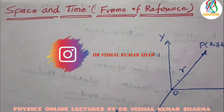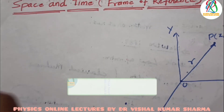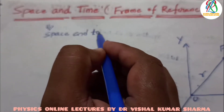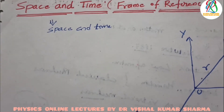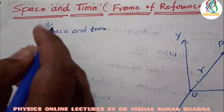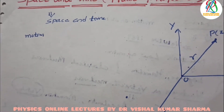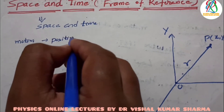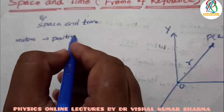Hello students, welcome once again to the new lecture on space and time, in which we will describe the frame of reference in classical mechanics. Space and time are continuous properties — we assume that space and time are continuous. If we discuss the motion of a particle, it can be described by knowing its position at different instants of time.